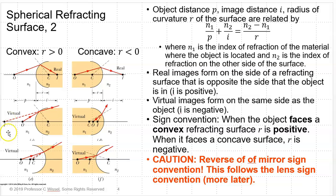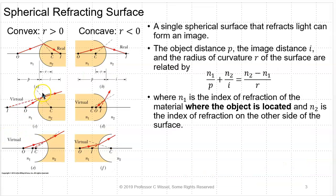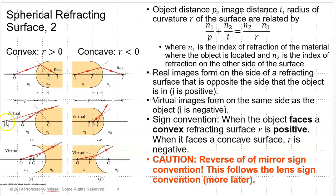Here's the situation where you have a virtual image. Here is your object — it is facing a convex surface, so R is greater than zero, and the virtual image is forming on the same side. Here the object faces a concave surface, and this will be a virtual image because it's on the same side as the object. Here is another case: the object is facing a concave surface, so R is negative — the image is virtual. And here is one facing a convex surface, so R is positive.